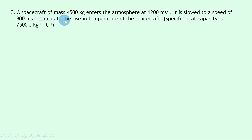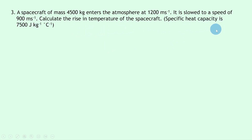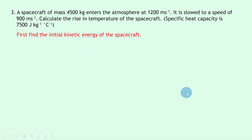Lastly, question 3 says: a spacecraft of mass 4500 kilograms enters the atmosphere at 1200 meters per second and slows to a speed of 900 meters per second. Calculate the rise in temperature of the spacecraft. We're told the specific heat capacity of the heat shielding material is 7500 joules per kilogram per degree Celsius. This is basically the same as question 2, just not split into two parts, so we do it as one whole answer.